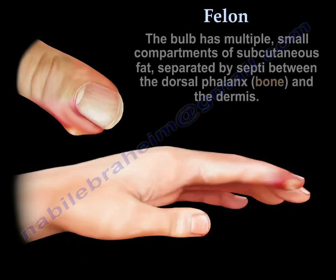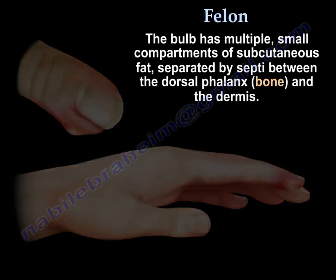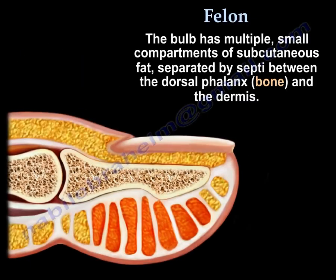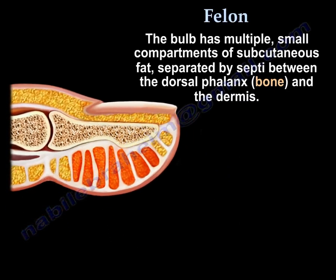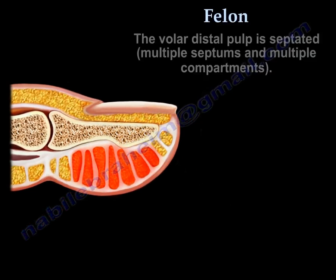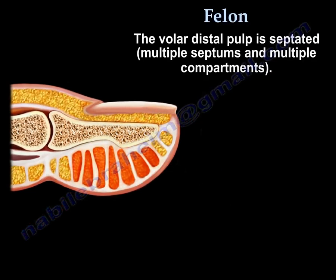The bulb has multiple small compartments of subcutaneous fat separated by septa between the dorsal phalanx, the bone, and the dermis. So the volar distal bulb is septated, with multiple septums and multiple compartments.